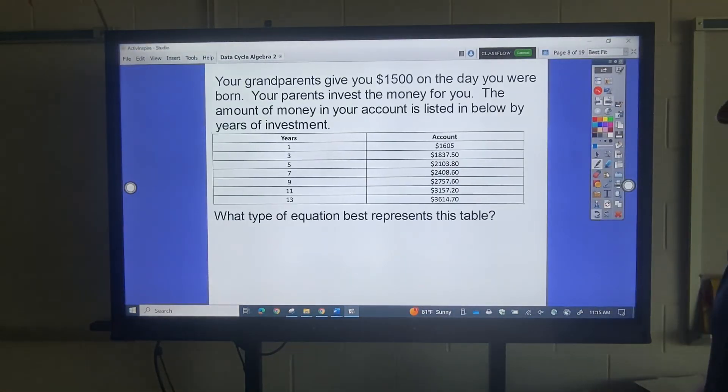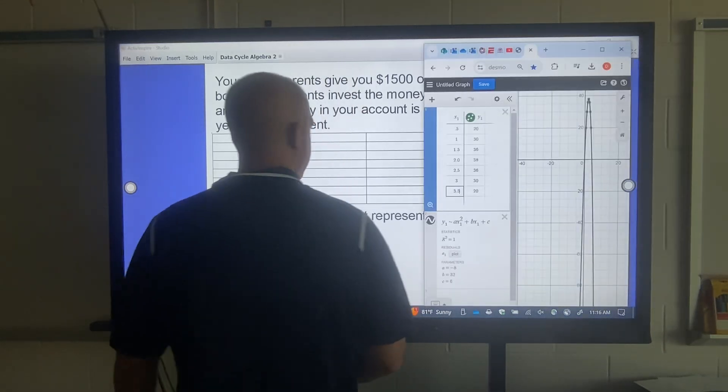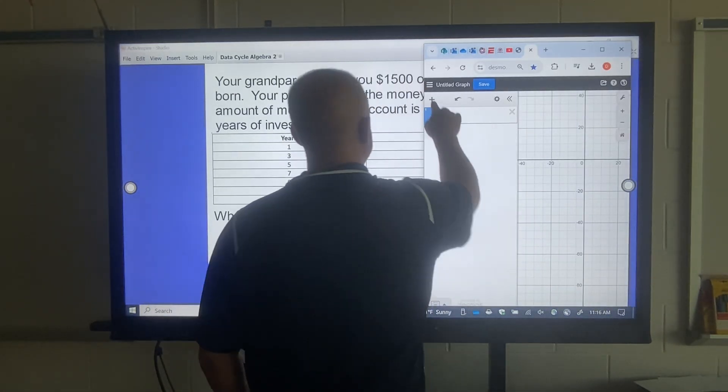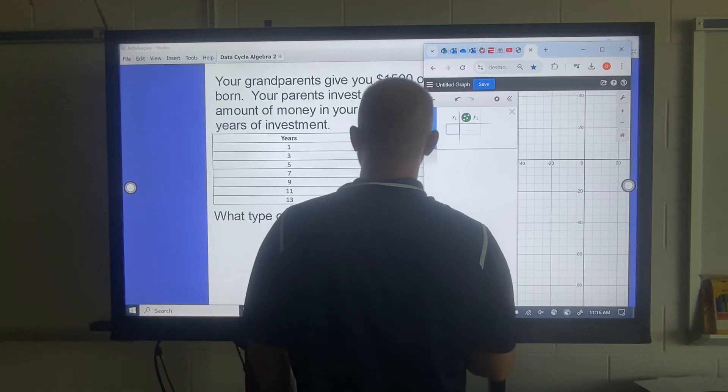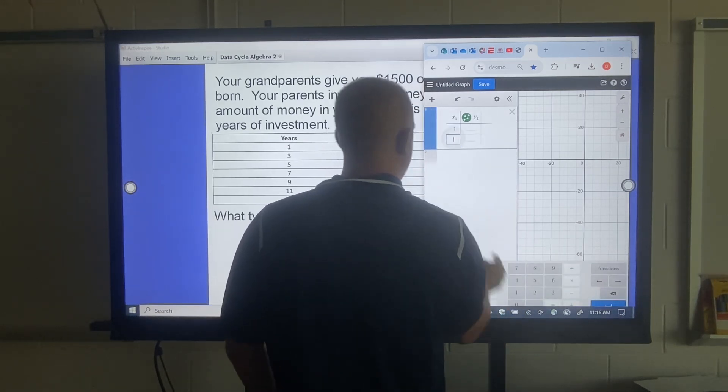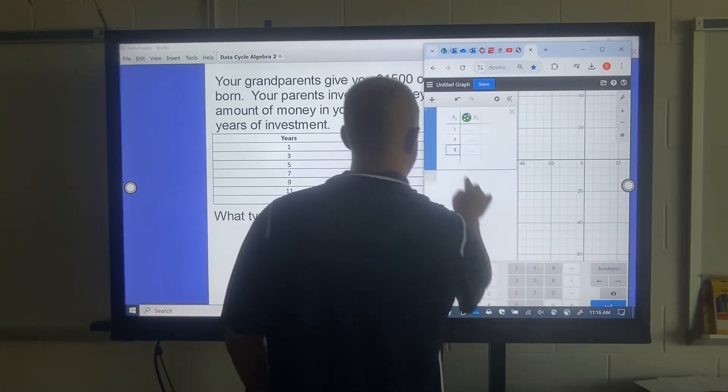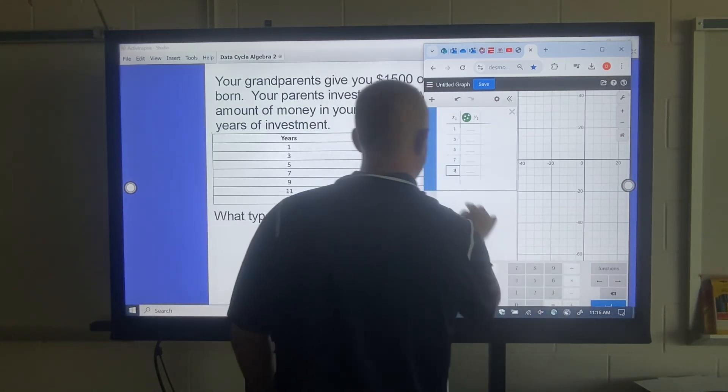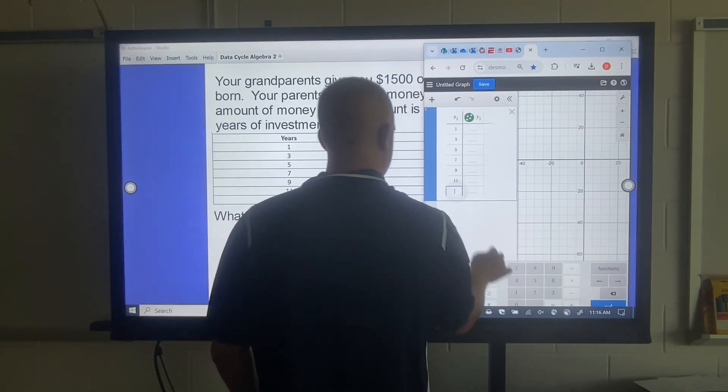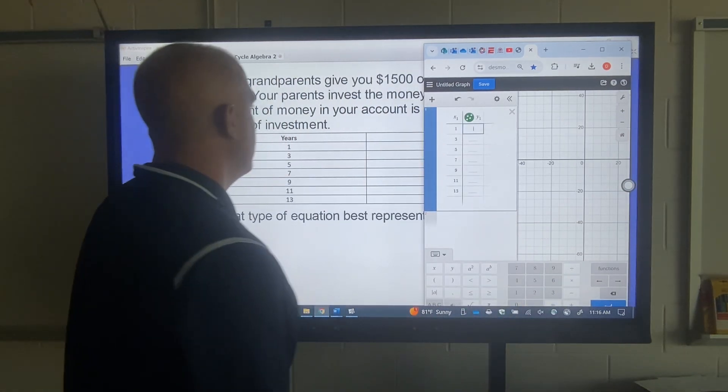And then here is the last one we're going to do. Your grandparents give you, nice grandparents, give you $1,500 on the day you were born. Your parents invest that money for you. The amount of money in your account is listed below. So I'm going to do my best here. I'm going to clear this out. I'm going to make my table. Hopefully, I don't mess it up this time. This X value is years. So 3, 5, 7, 9, 11, 13.